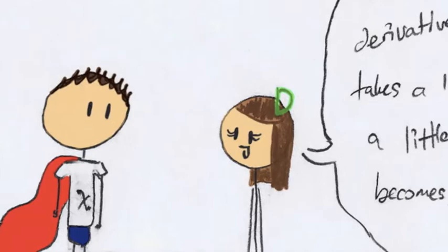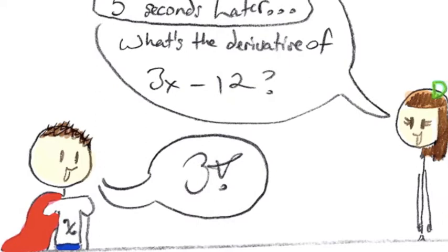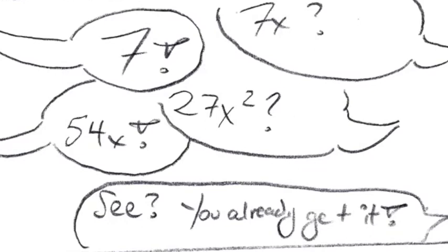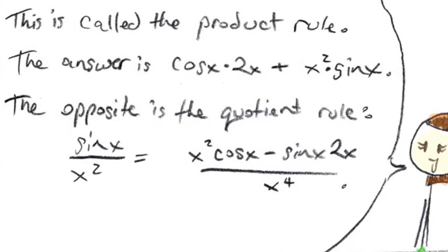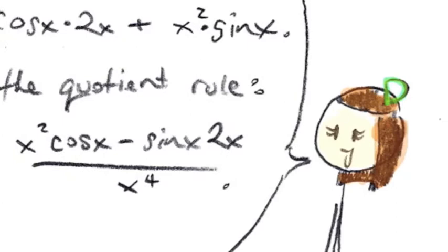Five seconds later. What is the derivative of 3x minus 12? 3! 7x. 7! 27x squared. 54x! See? You already get it. Yay! What's the derivative of sine of x times x squared? Uh... This is called the product rule. The answer is cosine of x times 2x plus x squared times sine of x. The opposite is the quotient rule. Sine of x over x squared equals x squared cosine of x minus sine x 2x. All over x to the fourth. These are all different rules of derivatives. Another is the chain rule.